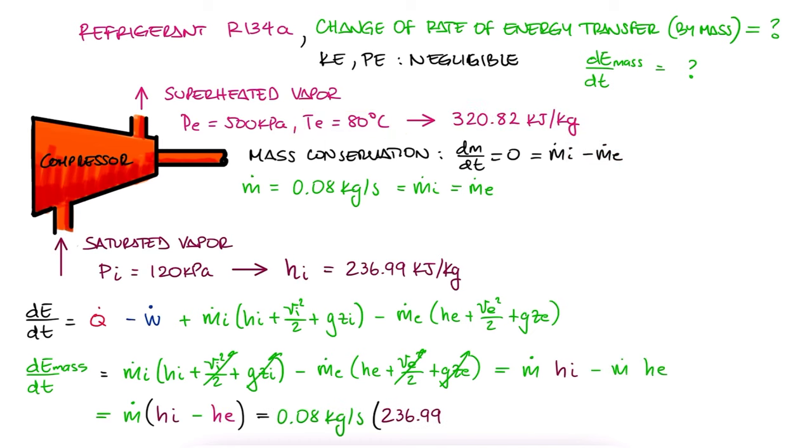We substitute the values and calculate the change in energy rate to be minus 6.7 kilowatts. This on its own only tells us that the system is losing 6.71 kilojoules every second. However, this is only true when we're not taking into account heat and work terms.